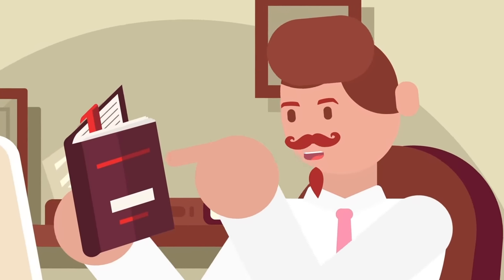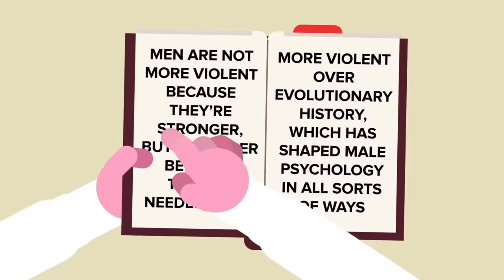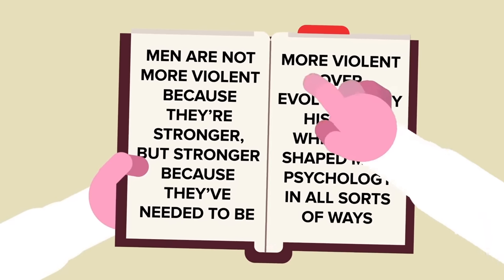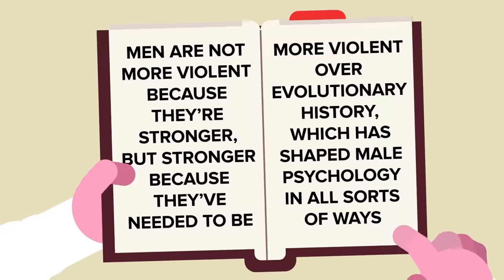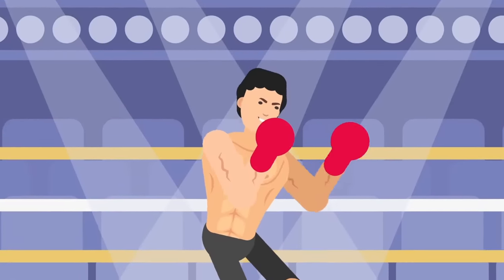It's like this, according to one scientist. Men are not more violent because they're stronger, but stronger because they've needed to be more violent over evolutionary history, which has shaped male psychology in all sorts of ways. So never mind how puny you are, you've been designed to be a fighting machine, but what about the brain?